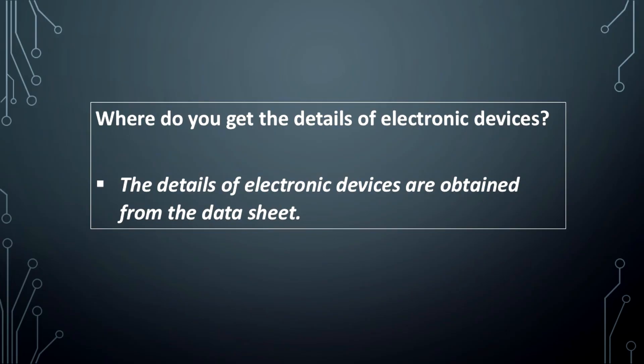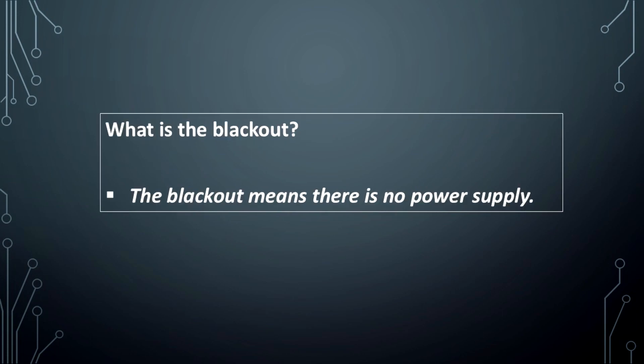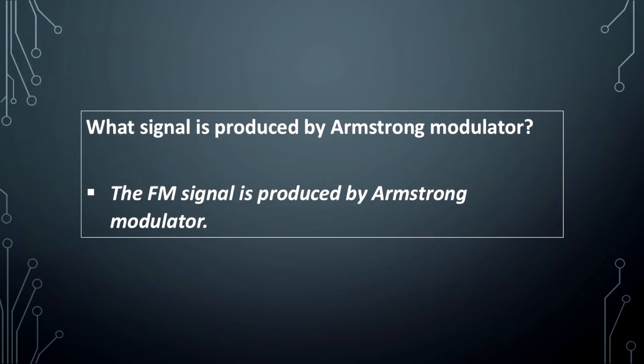Where do you get the details of electronic devices? The details of electronic devices are obtained from the datasheet. What is the nibble? The nibble is a 4-bit word. What is the blackout? The blackout means there is no power supply.